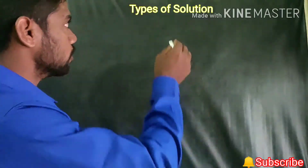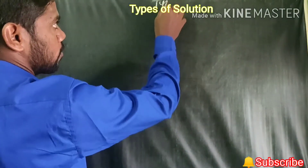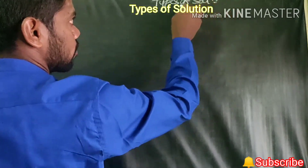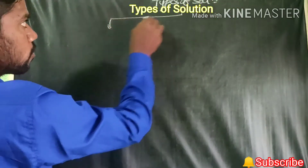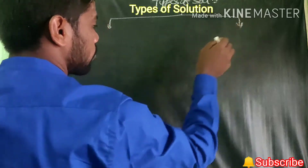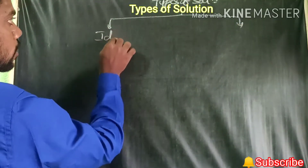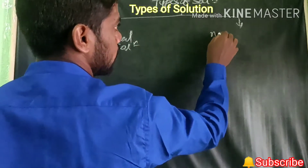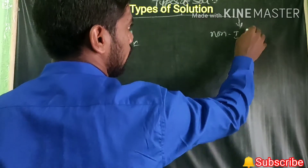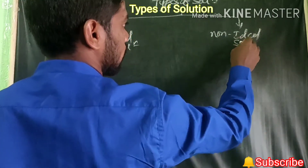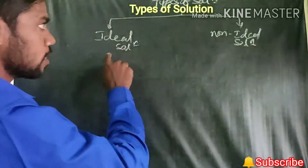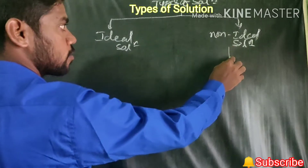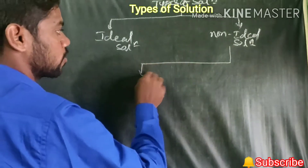We already discussed the types of solution. In the types of solution, we classified solutions into two types: one is the ideal solution and one more is the non-ideal solution. This non-ideal solution we classified again into two types.